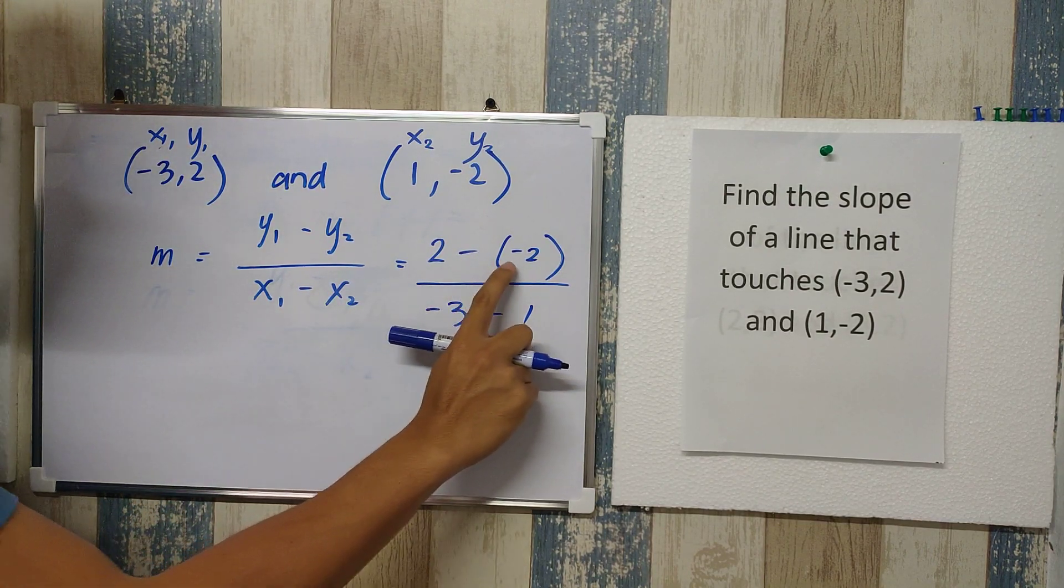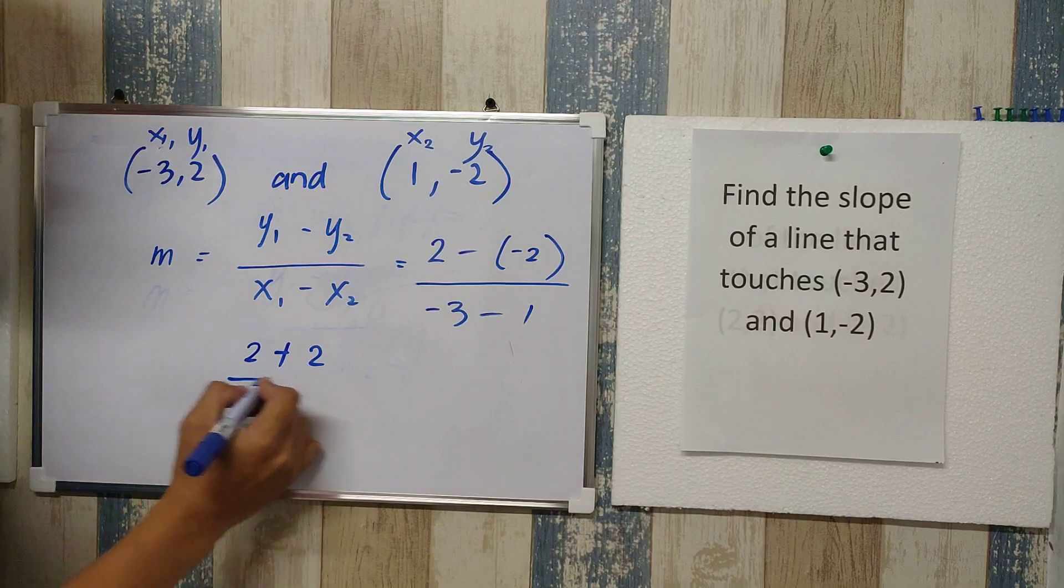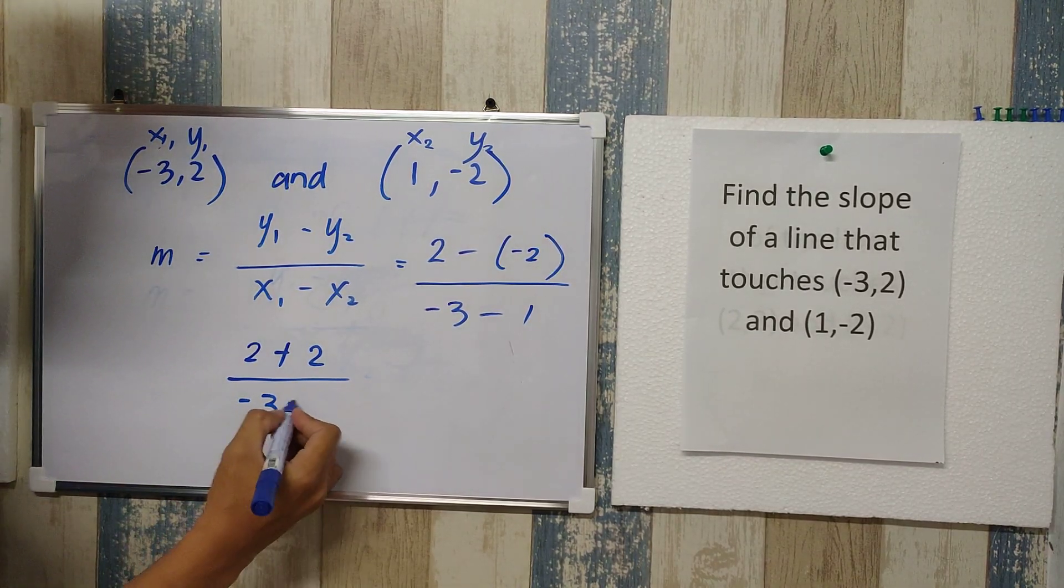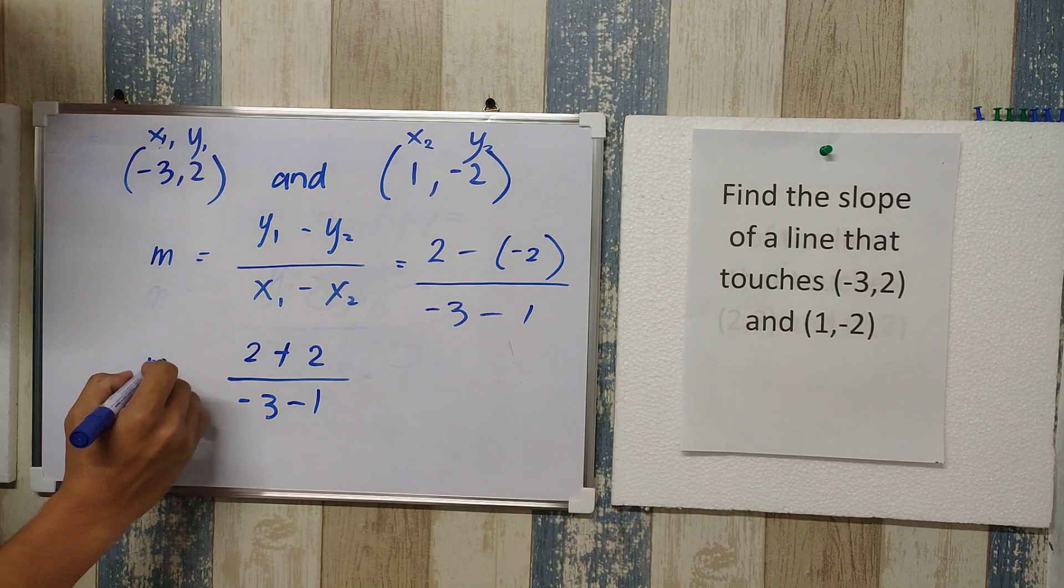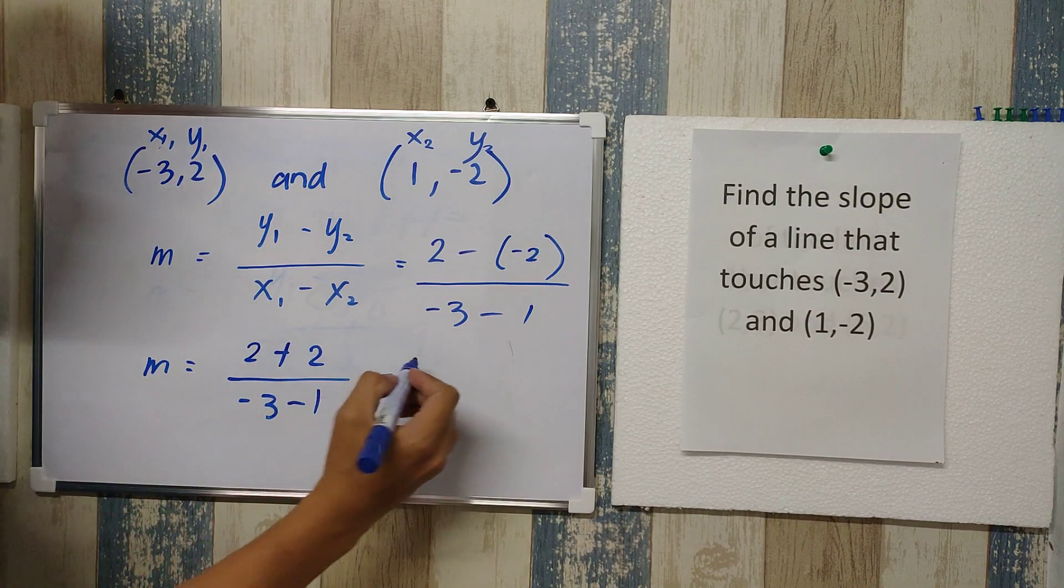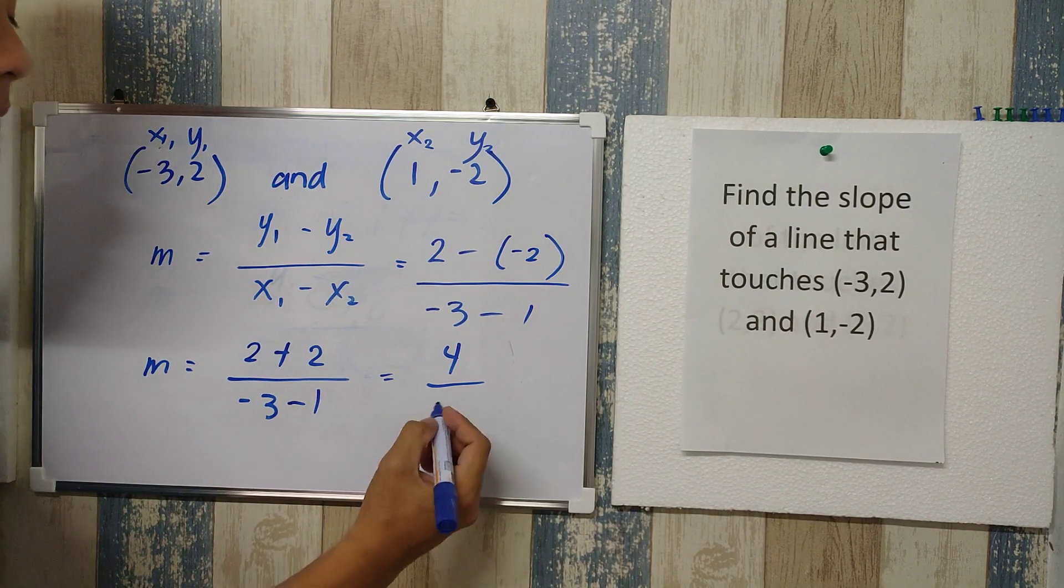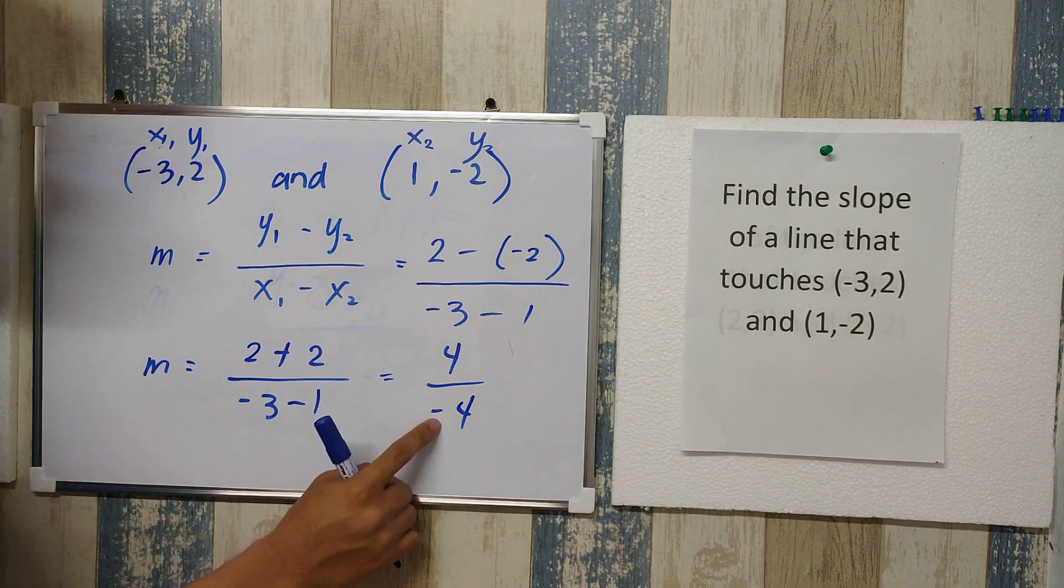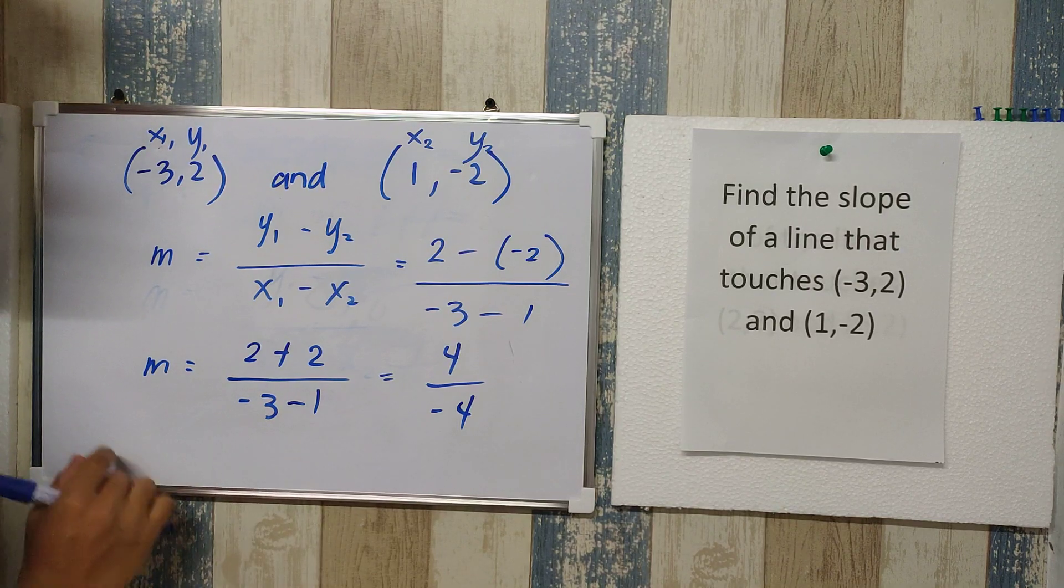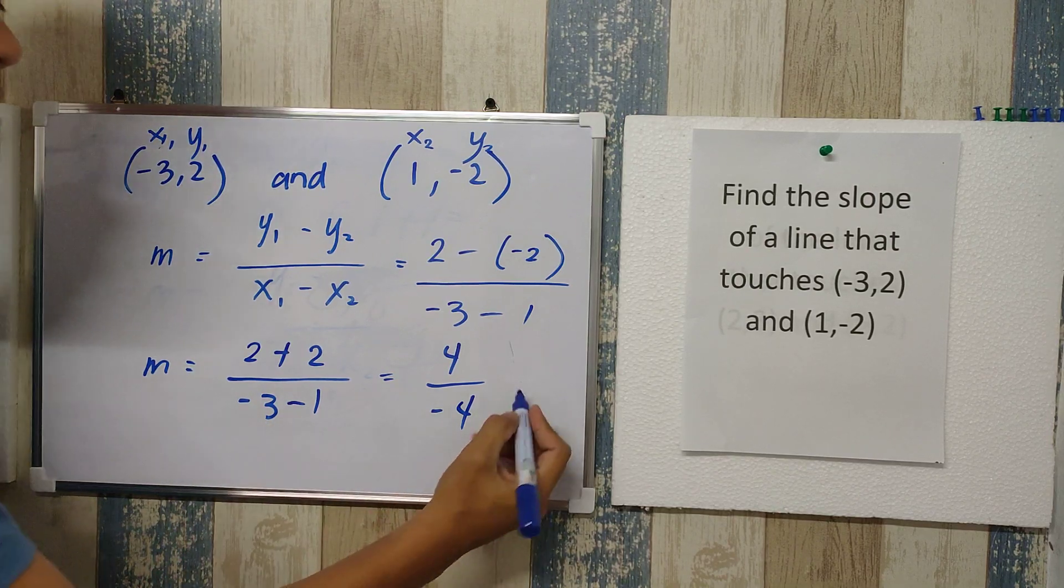Again, we're looking for the slope. On trying to simplify this one, 2 plus 2 is 4, positive 4. Negative 3 and negative 1 is negative 4. Both are negatives, so the final answer here should be negative. What happened is, it's like we borrowed 3, then we borrowed 1 again. We got 4 debt, so it's negative 4.